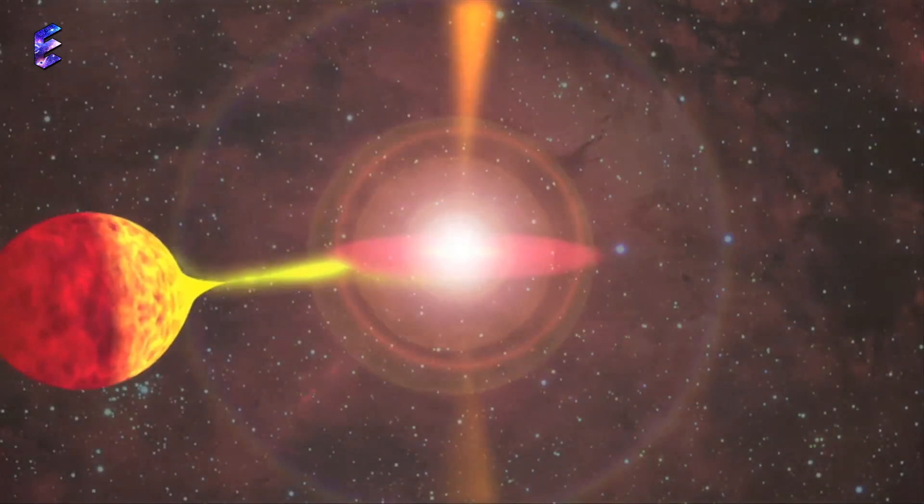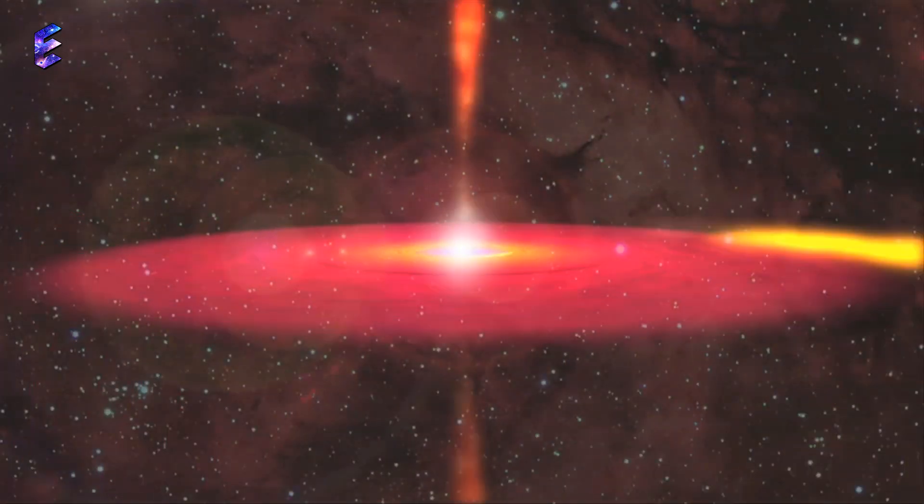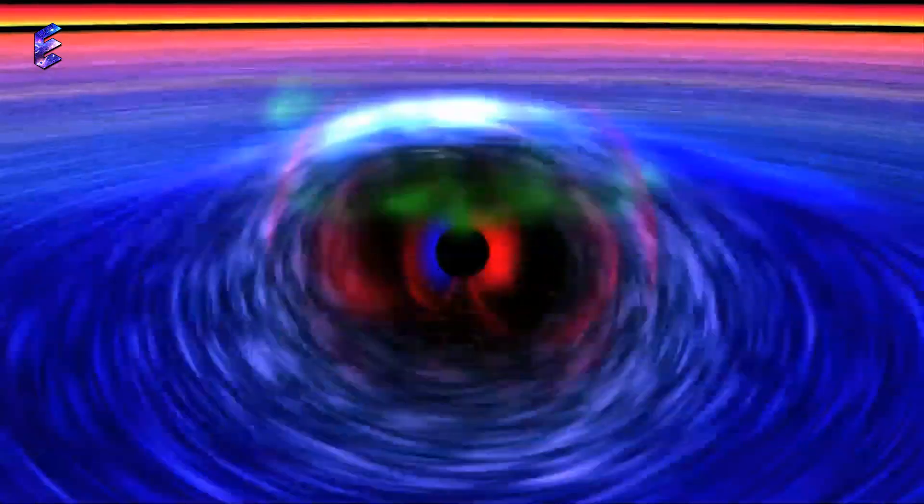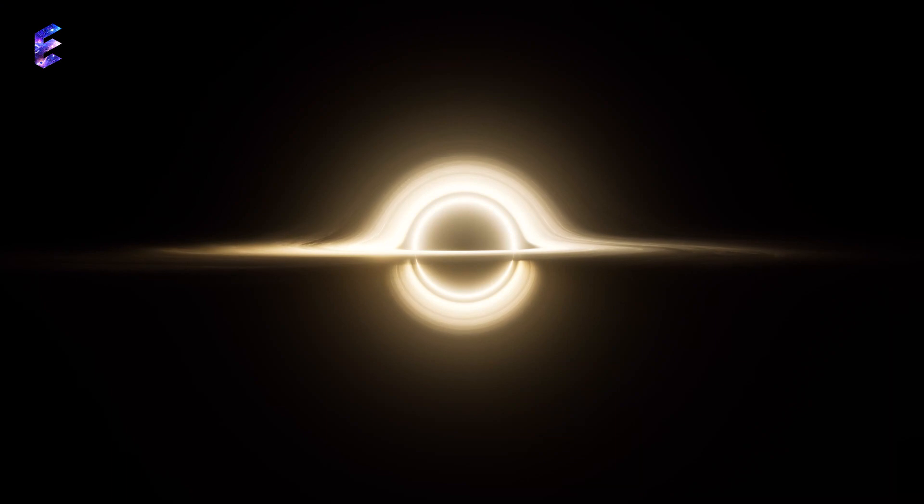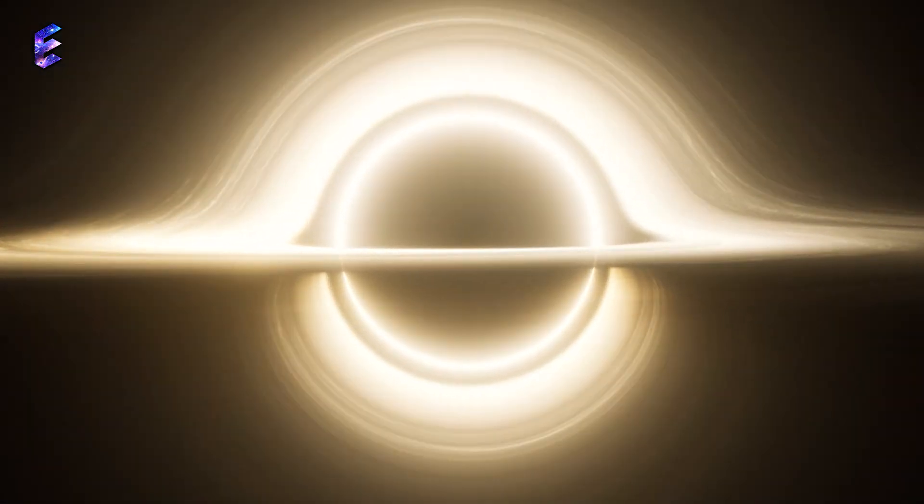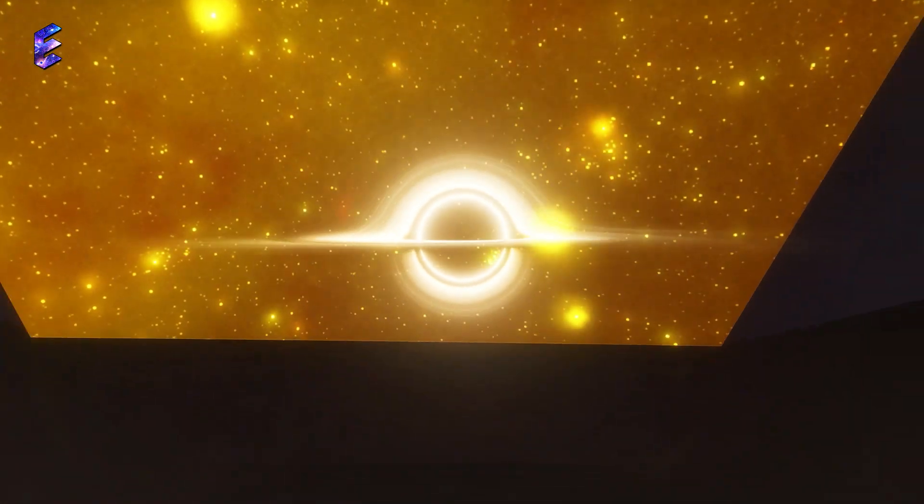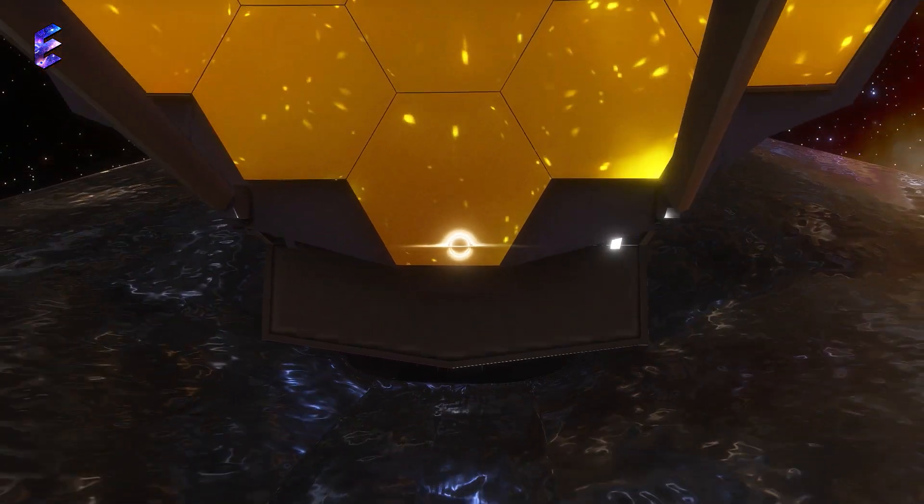Webb has not only identified these early galaxies, but it has also detected a black hole that is nearly as old as the universe. Scientists have discovered what they believe to be the oldest known black hole in the universe, owing to the telescope's ultra-powerful sensors that captured this elusive entity.